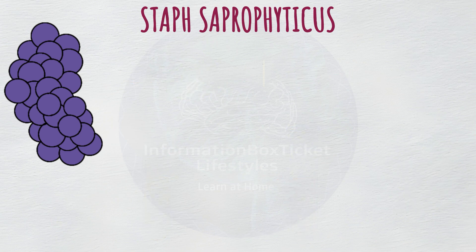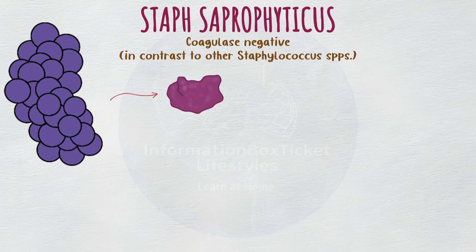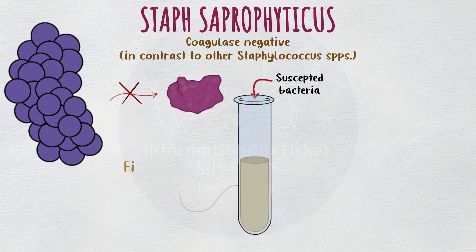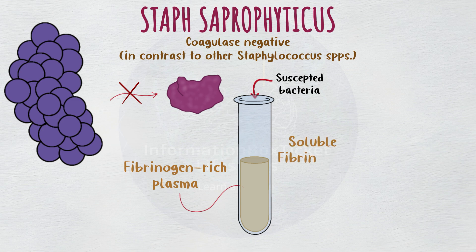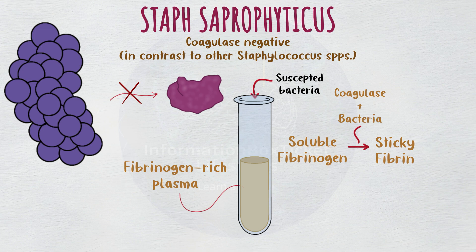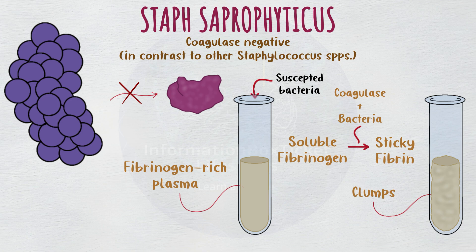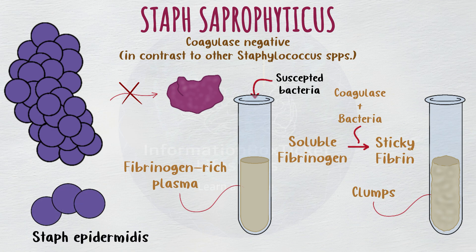Enterococcus faecalis and Streptococcus pneumoniae are examples of urease-negative gram-positive cocci that do not exhibit this behavior. Moreover, Staph saprophyticus and its near-related Staph epidermidis are coagulase-negative, which means they do not generate the coagulase enzyme, in contrast to many other Staphylococcus species. Testing for coagulase is done by transferring a colony of the suspected bacteria into a test tube containing fibrinogen-rich plasma. Coagulase-positive bacteria, such as Staph aureus, change soluble fibrinogen into sticky fibrin, causing the fibrin to clump together, while coagulase-negative organisms such as Staph saprophyticus or Staph epidermidis do not cause clumping.